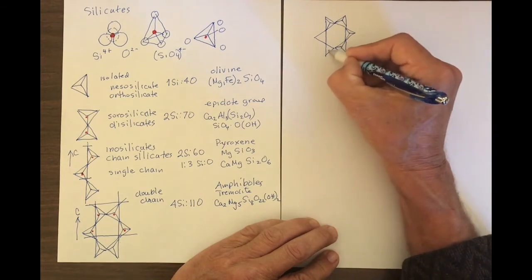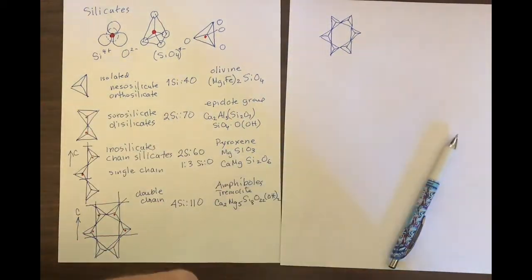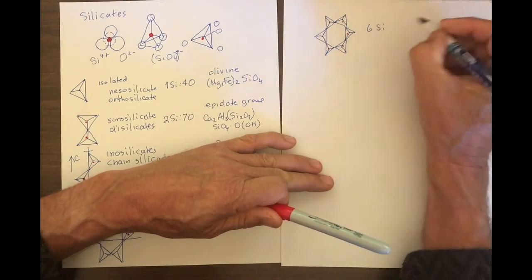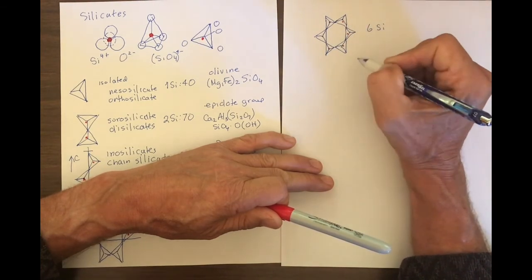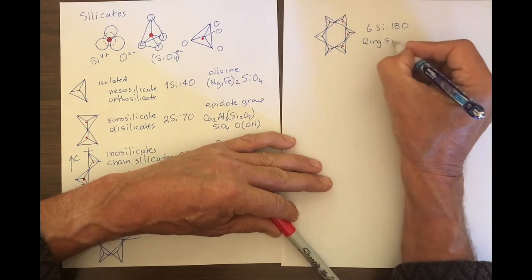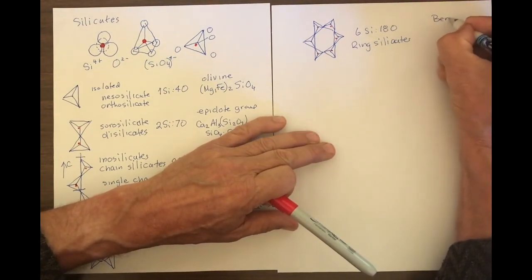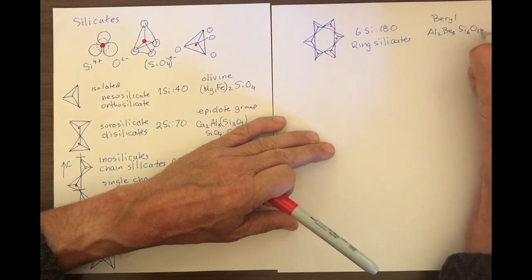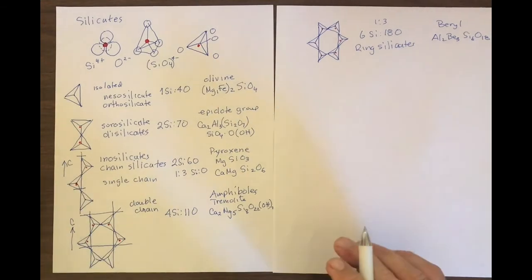Virtually all the ring structures in the earth are six-membered rings. It's easy to count: six silicons, and with six shared oxygens on the ring plus two more per tetrahedra pointing out, that gives 18 oxygens. So the ratio is six to eighteen, or one to three. Common ring silicates include beryl and tourmaline. Beryl has the formula Al2Be3Si6O18, and you can see this has the same one to three ratio of silica to oxygen as the inosilicate pyroxene group.